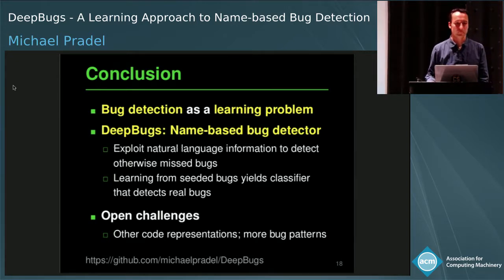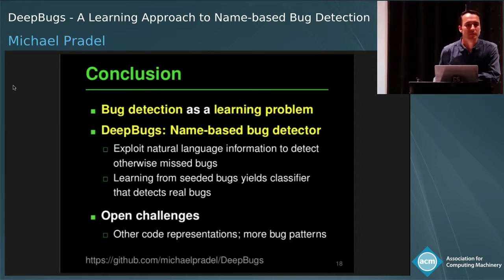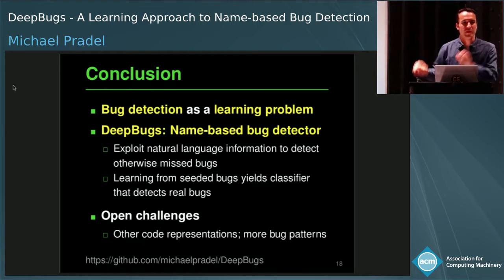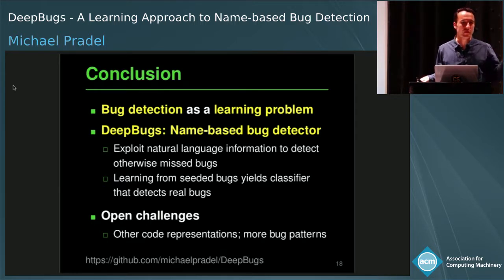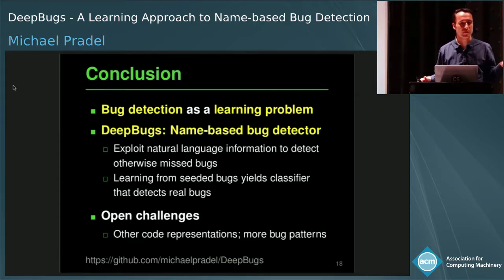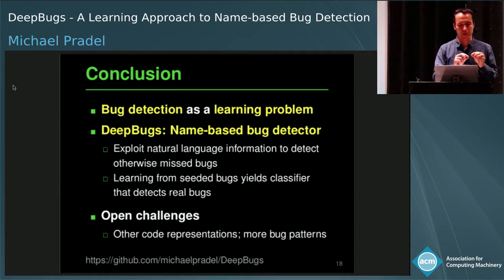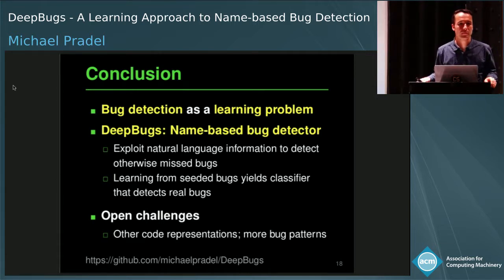Q: When you use random embeddings for comparison, is that embedding trainable or is it a fixed random embedding? A: It's a fixed random embedding — there's no embedding layer in the actual classifier, so it just uses a random vector for every name. You could use an embedding pre-trained on natural language (like Wikipedia), but that's not ideal because many terms in source code are unique to code. What we do is apply word2vec to the training code corpus, treating every file as a sequence of tokens, where a token is like a word.